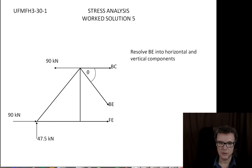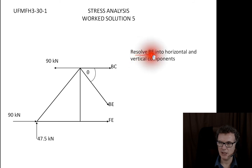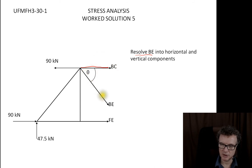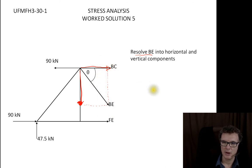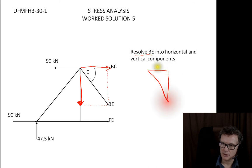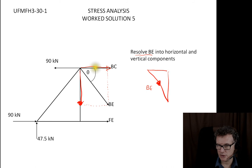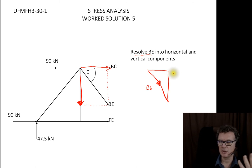We're going to resolve the BE force into its two components, getting rid of the force going in the skewed direction and replacing it with two components. You might want to draw a little side triangle diagram. The BE force is pointing down in this direction. I've decided all my forces are pointing away from the joints — if I get a negative answer, that just means the member is in compression.